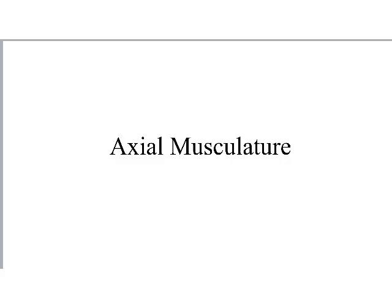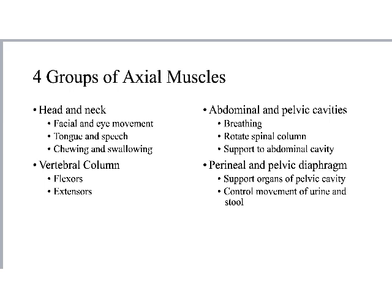Just as we had axial bones and appendicular bones, we're going to have axial musculature and appendicular musculature. This lecture will focus on the axial musculature: face, neck, chest, and spine/back. We'll have a separate lecture for shoulder, arms, pelvic girdle, and legs. Here are the four groups of axial muscles.